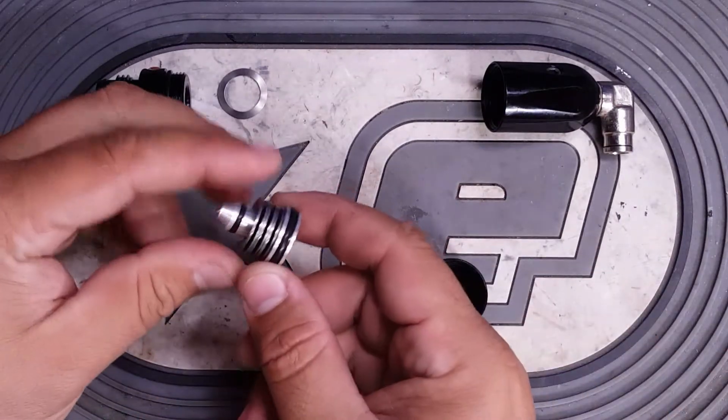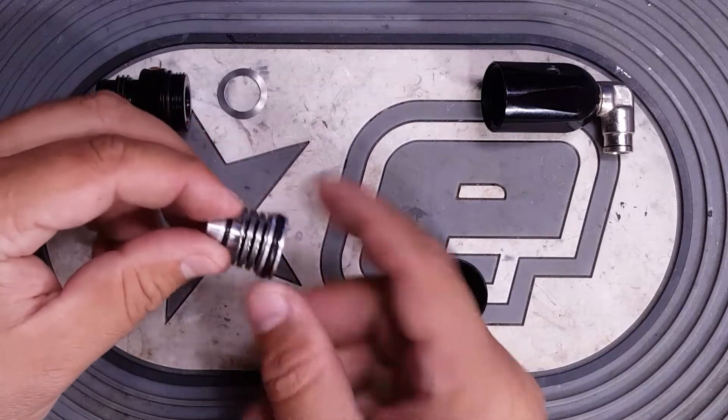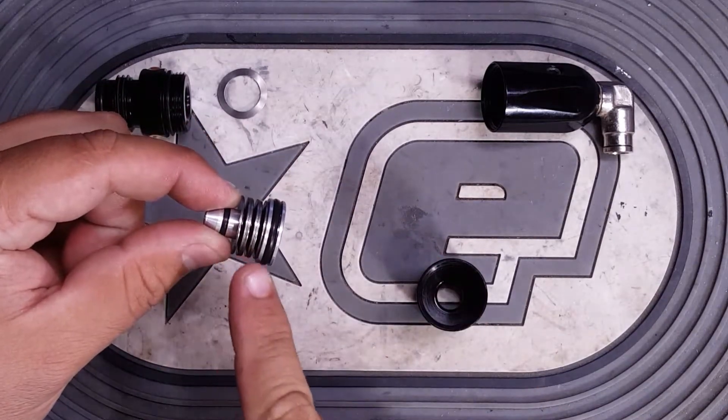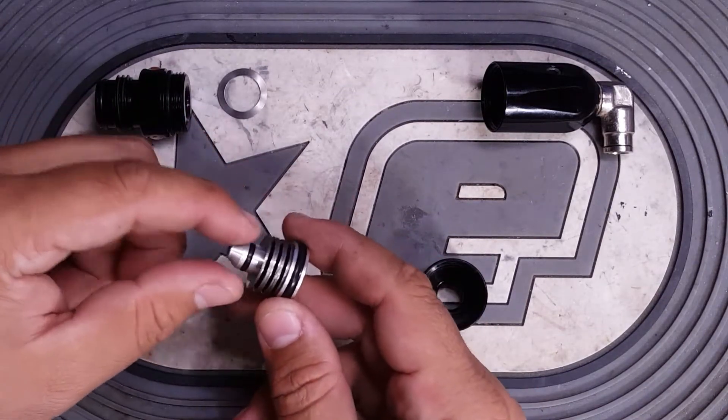And they do go in a specific order. They go back to front, all the way down. There are six washers in this V1 regulator.